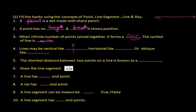Lines may be vertical, like this; horizontal, like this; or oblique — meaning slanted — something like this. So lines can be vertical, horizontal, or oblique.